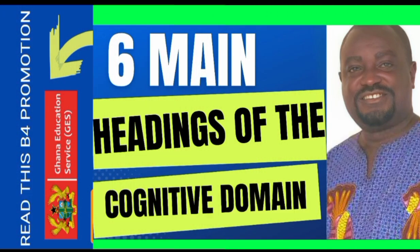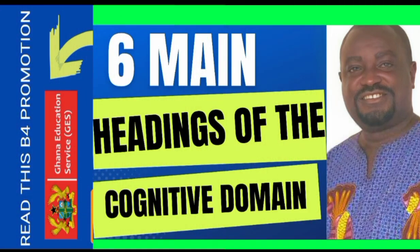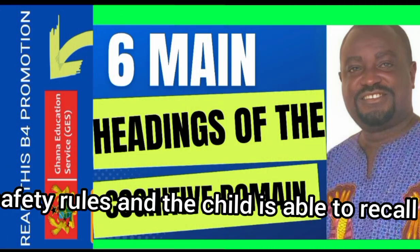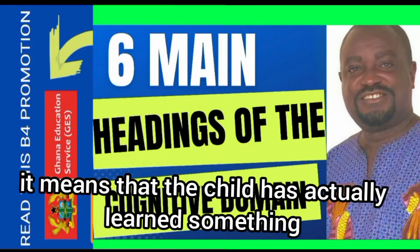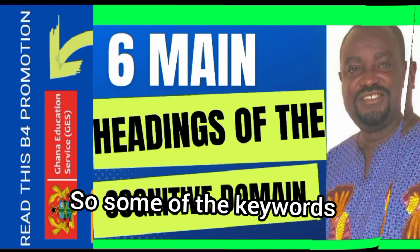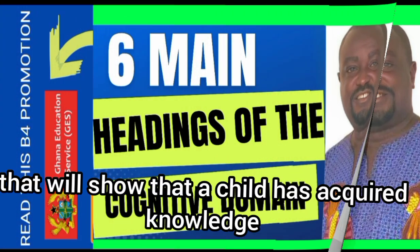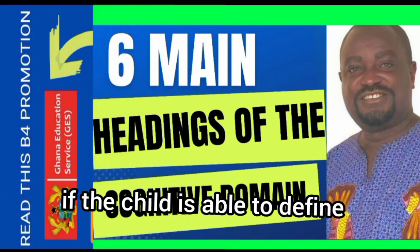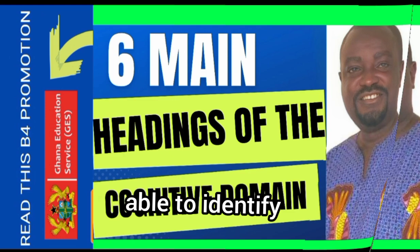Some of the keywords that will show that a child has acquired knowledge are: if the child is able to define, describe, identify, knows, label, list, match, name, outline, record, recognize, reproduce, select, and state. These indicate that the child has acquired knowledge.